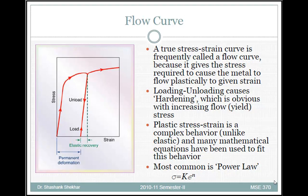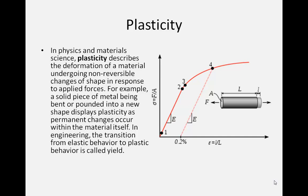A flow curve is basically the true stress-strain curve, and it gives the stress required to cause the metal to flow plastically. Plastic behavior is described mathematically, and one of the most common ways is through the power law: σ = K·εⁿ, where K is the strength coefficient and n is the strain hardening exponent.